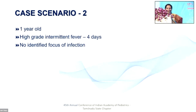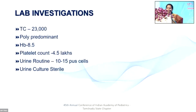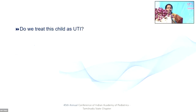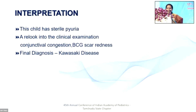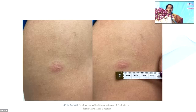Moving on to the next case: a one-year-old with high-grade intermittent fever of four days duration, no identified focus of infection clinically. Total count is 23,000, poly predominant. Hemoglobin is 8.5, platelet count is 4.5 lakhs. Urine routine shows 10 to 15 pus cells, so you send a urine culture. It's not wrong to start antibiotics pending the culture. However, the urine culture comes sterile. Re-examination shows conjunctival congestion and BCG scar redness — clinical findings you should never forget to look for.